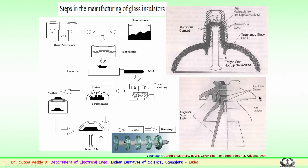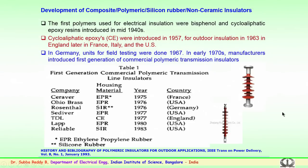There is a zinc thimble used for thread arrangements, used to mount the insulator on poles with a threaded arrangement on the platform wherever the insulators are to be placed. We have discussed the manufacturing of both porcelain or ceramic and glass insulators — both are electrically and mechanically stable and have been used for a very long period, more than a century.